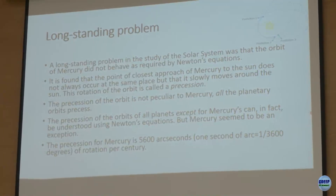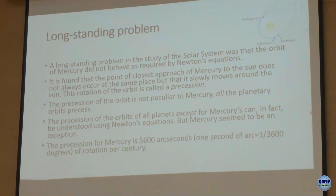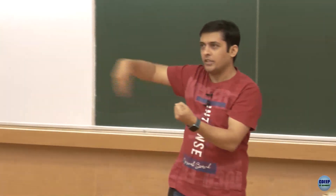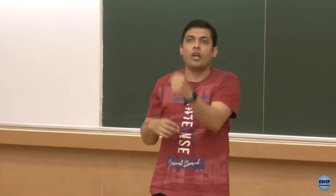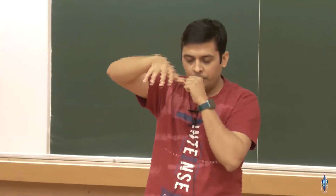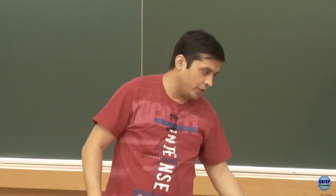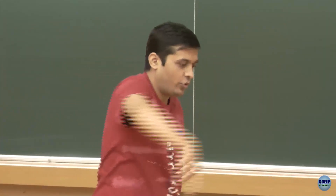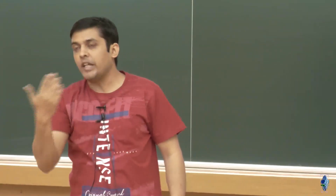There is a long-standing problem with Mercury that was eventually resolved. As you get closer to the sun, a planet's orbit undergoes precession — the orbit maintains the same dimensions but slowly rotates in space, like a spinning top wobbling around an axis. Precession is more visible on Mercury because it's very close to the sun.